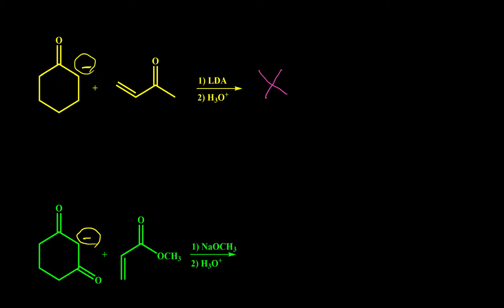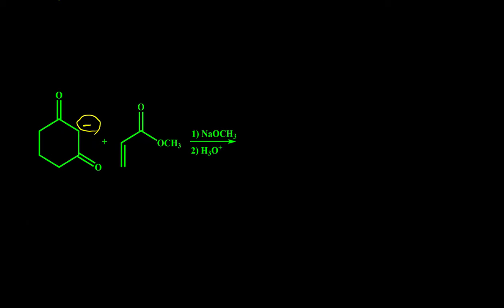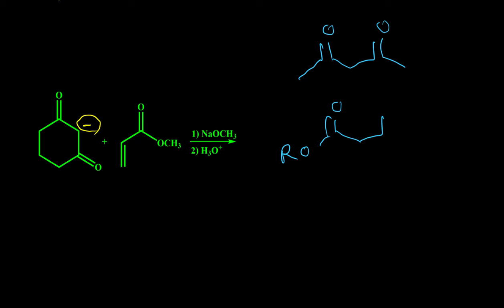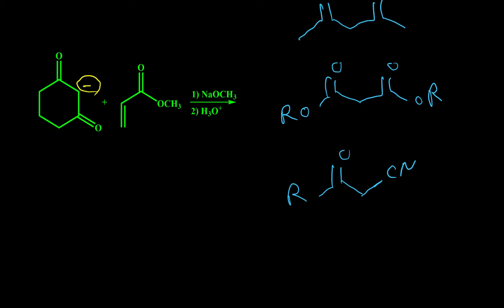Here are some of the most famous Michael donors: beta-diketone (1,3-diketone), diester, the enolate between a carbonyl and a cyanide group, and also nitro compounds — where the negative charge alpha to the nitro group can react in Michael reaction.